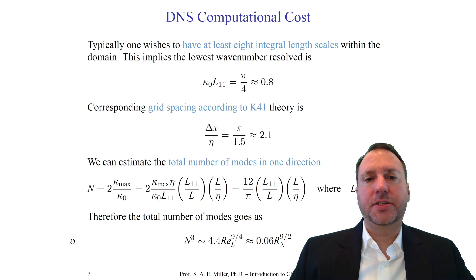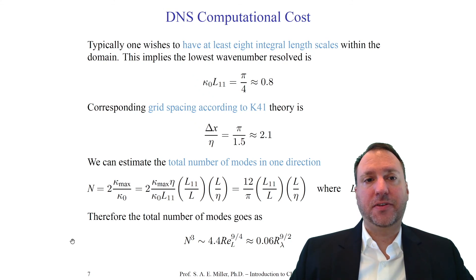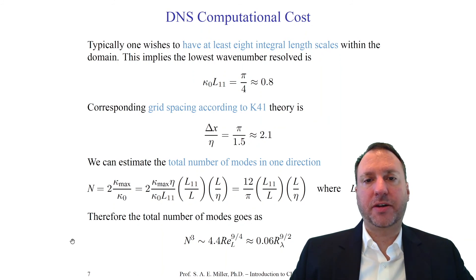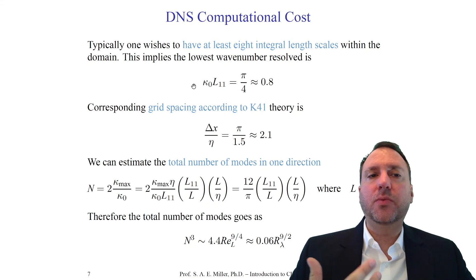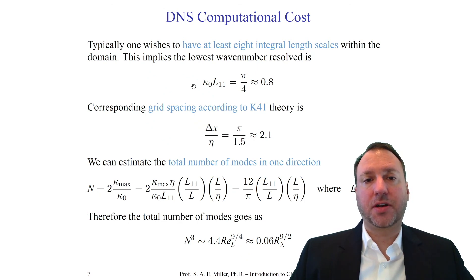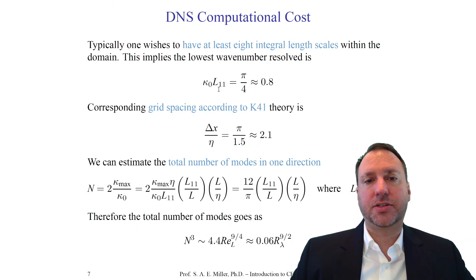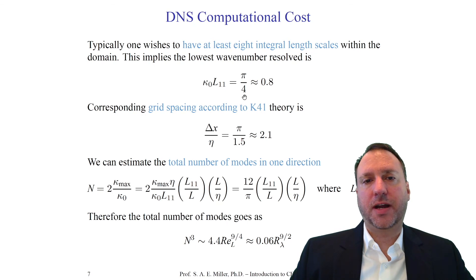Let's estimate the computational cost for a typical DNS simulation. One would typically wish to have at least eight integral length scales within the domain. With a domain of length L and a base wave number kappa-naught representing the largest scales, multiplied by the integral length scale, we get a value going as 2π/L, essentially π/4, which is about 0.8 for this domain.